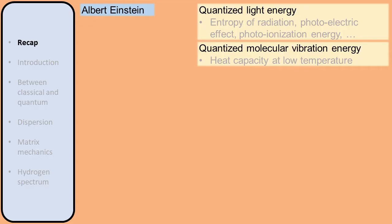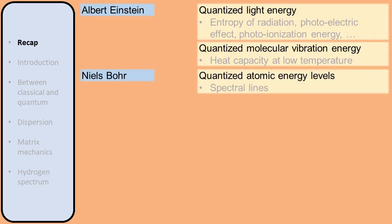Because of the stark contradiction with the well-established wave theory of light, which saw its ultimate success in the discovery of Maxwell's equations, Einstein's idea of quantized light was met with significant skepticism. However, his idea of quantized energy levels of molecular vibrations to explain the heat capacity of solids at low temperature was more readily accepted. The serious development of quantum mechanics had started. Another phenomenon that drove the development were the spectral lines of chemical elements. Each element can emit light only at a very specific set of frequencies, and this could not be explained with classical physics. Niels Bohr explained this by assuming that electrons in an atom can orbit the nucleus only in a discrete set of energy levels, with spectral line frequencies determined by the difference between energy levels.